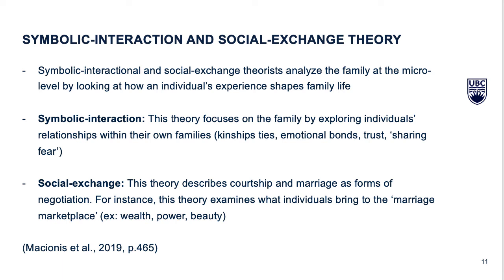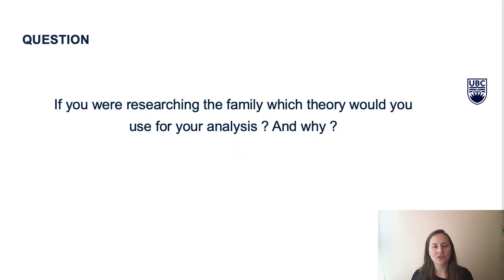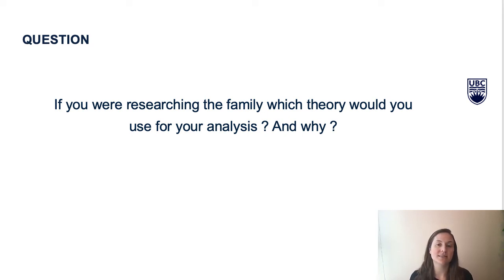Social exchange theory describes courtship and marriage as forms of negotiation. This theory examines what individuals bring to the marriage market — things like wealth, beauty, and power. After learning about these three theoretical approaches, if you are researching the family, which theory would you use and why? No theory is necessarily better than another; it just depends on your topic and desired approach, as well as the assumptions that you are making about reality and society.